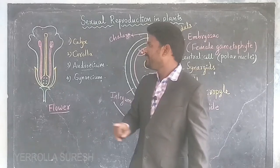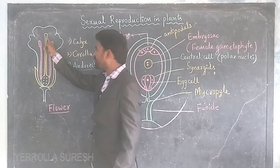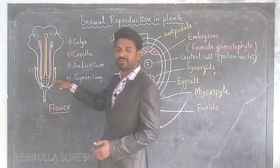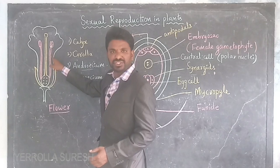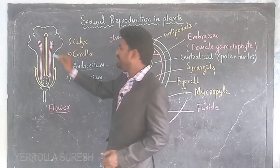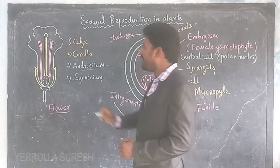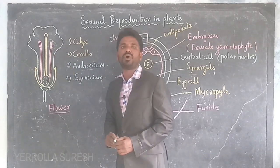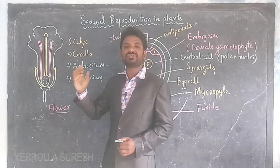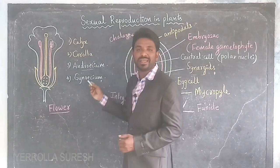In the androecium, we find the stamens. In a stamen, the upper part is called the anther and the lower part is called the filament. Inside the anther, a powder-like substance is formed called pollen grains. These pollen grains act as the male gametes in the flower. So the male gametes are pollen grains, and they are developed in the stamens.